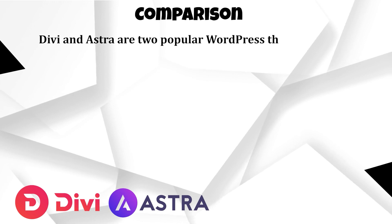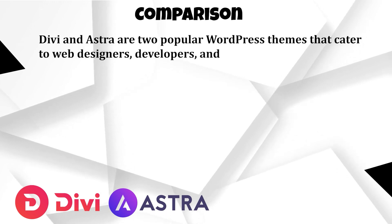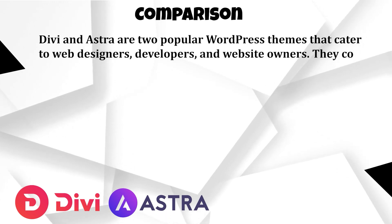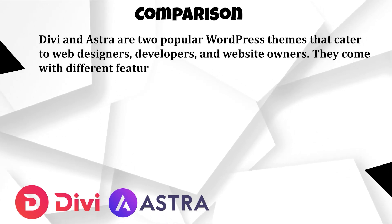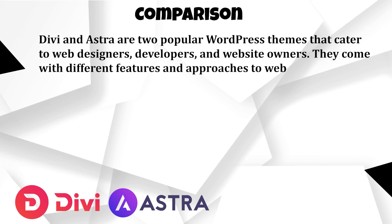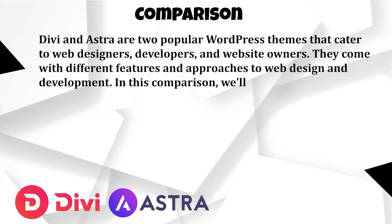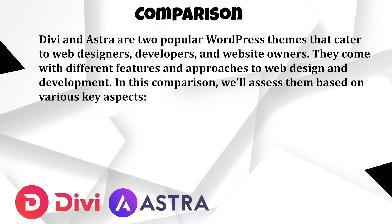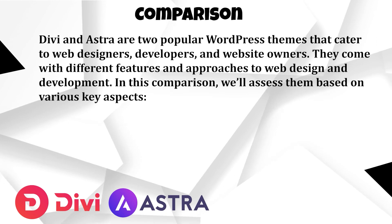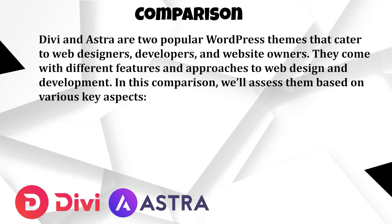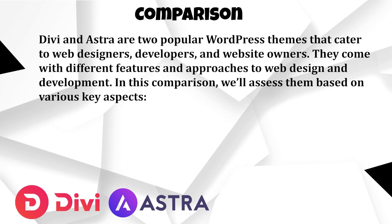Divi and Astra are two popular WordPress themes that cater to web designers, developers, and website owners. They come with different features and approaches to web design and development. In this comparison, we'll assess them based on various key aspects.